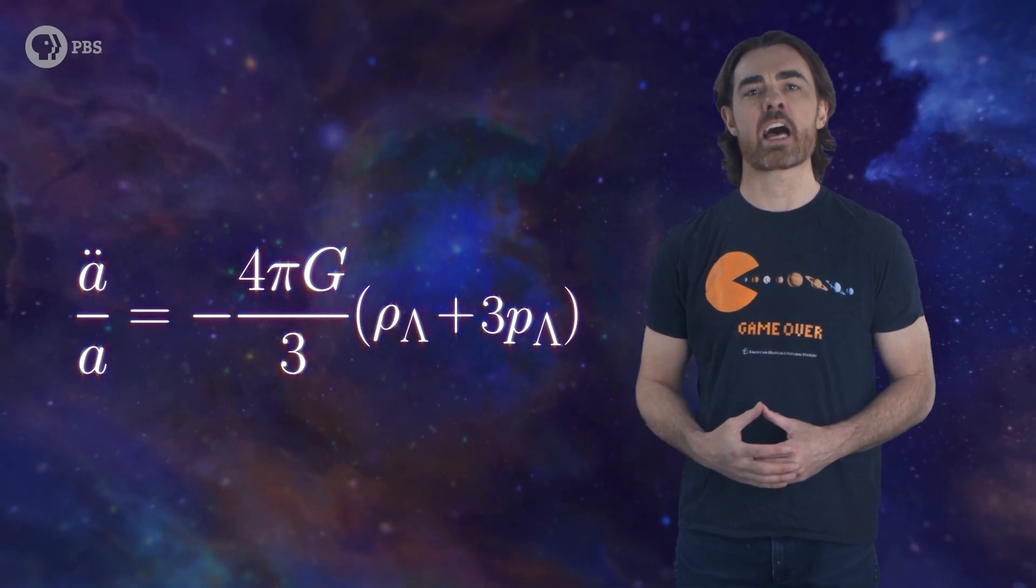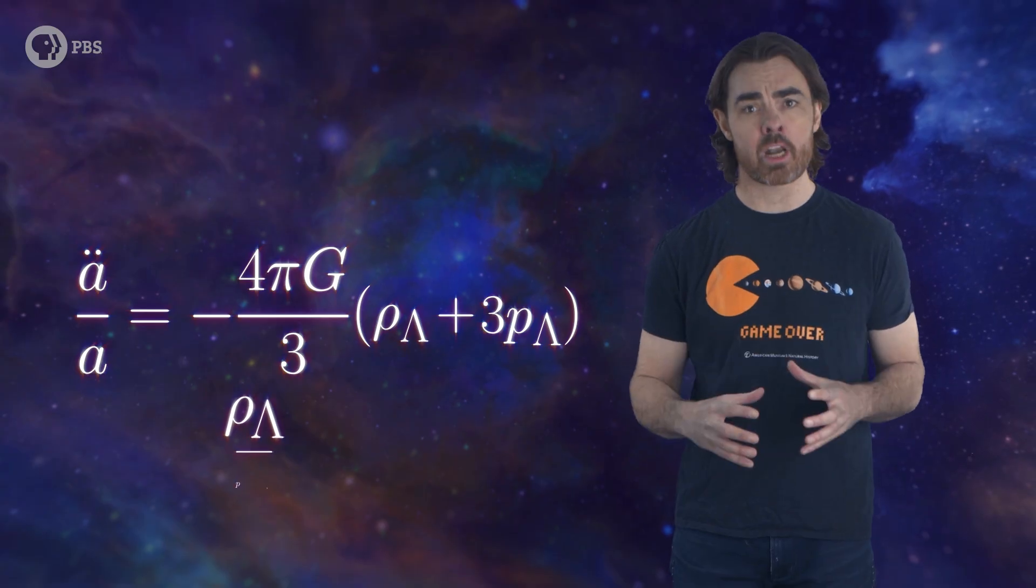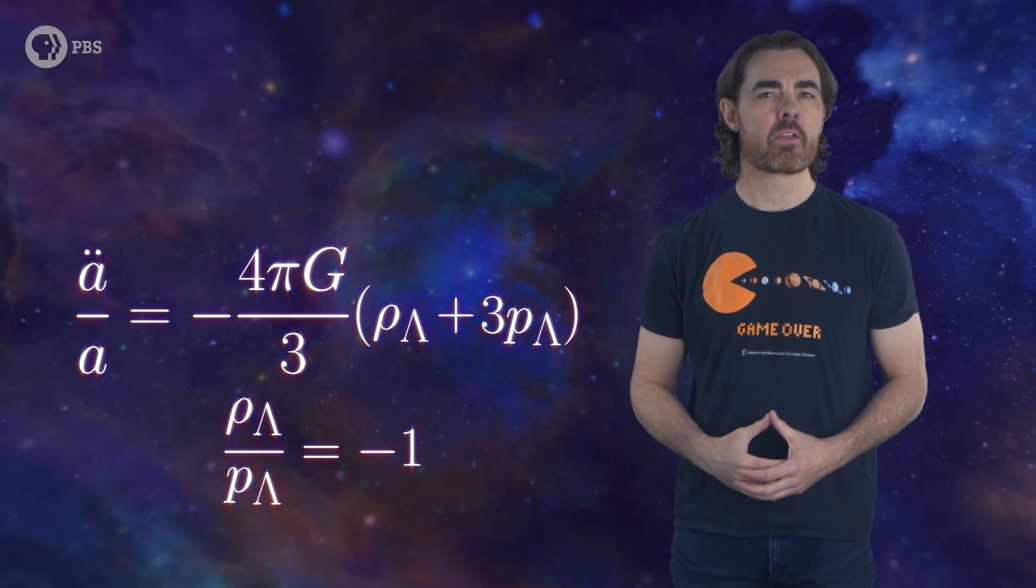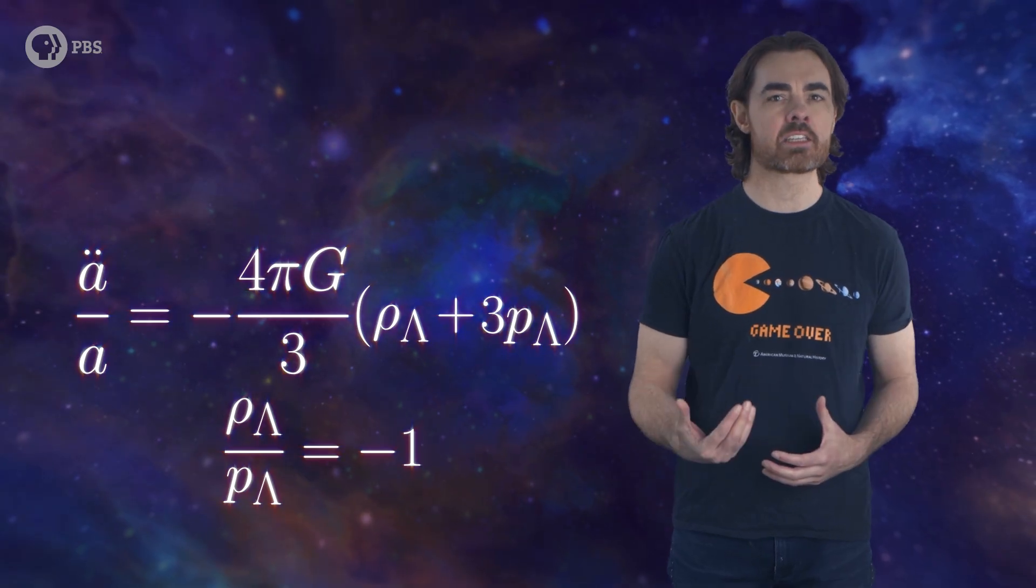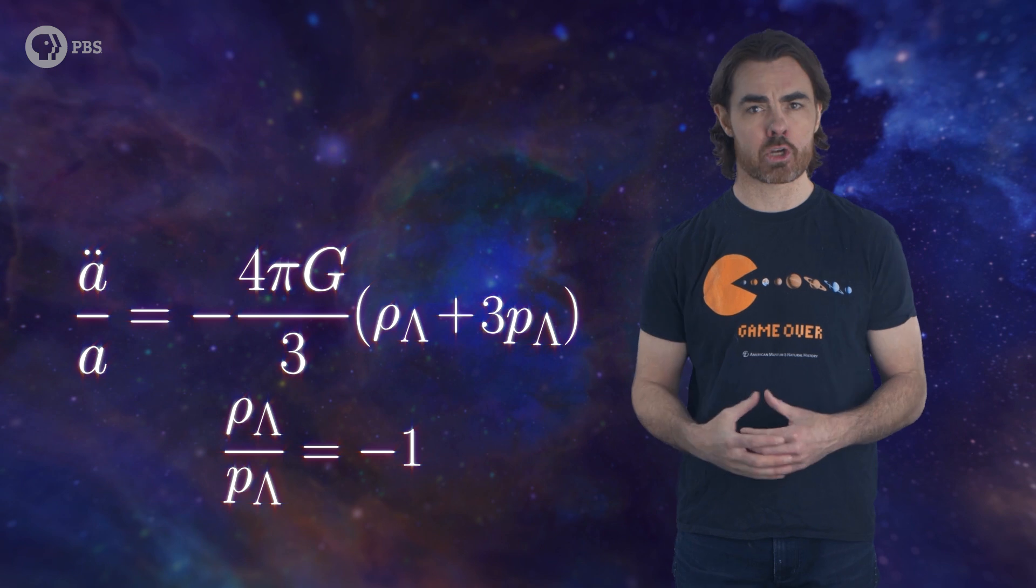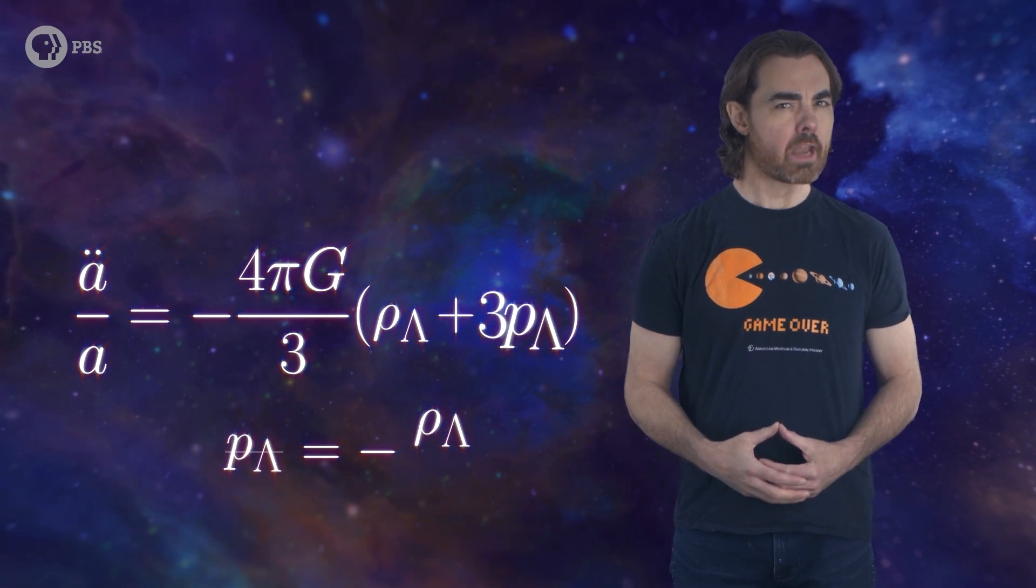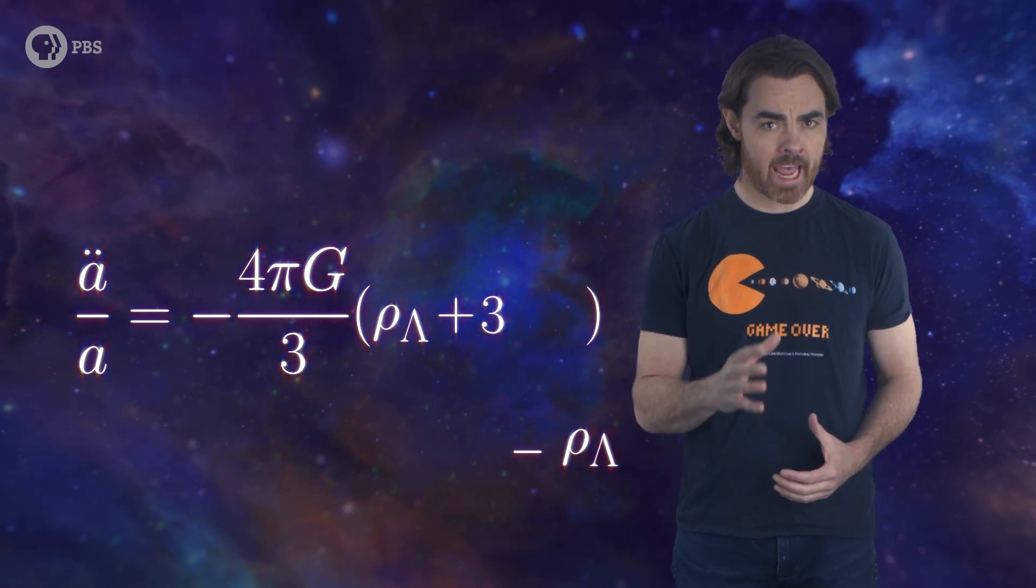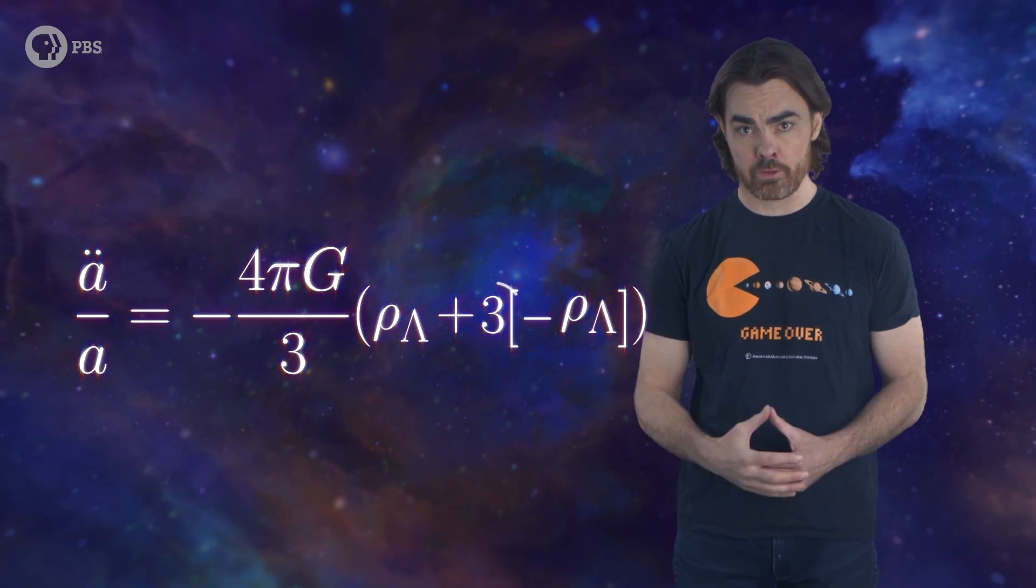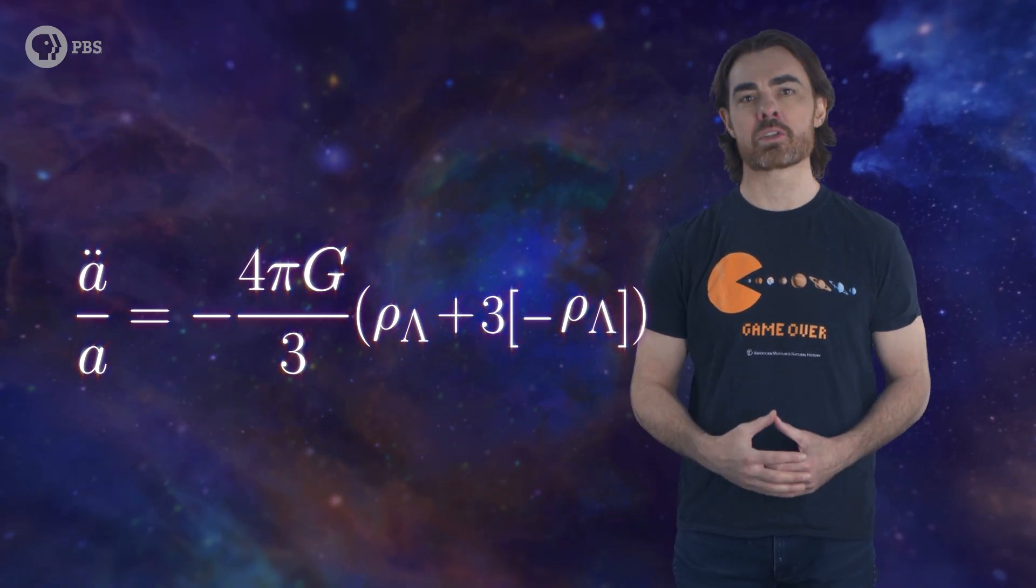The equation of state of dark energy is pressure divided by density equals negative 1. That just means that as volume increases, density does not go down. The basic definition of the cosmological constant. So now the pressure term is negative, and because of this factor of 3, it's a bigger influence than the density.